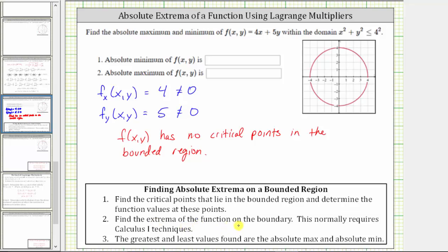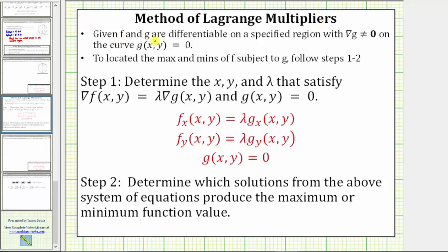The next step is to find the extrema of the function on the boundary using the method of Lagrange multipliers. To review: given that f and g are differentiable and the gradient of g does not equal the zero vector on the curve g(x,y) = 0, to locate the max and mins of f subject to the constraint g, we find x, y, and lambda satisfying the gradient of f equals lambda times the gradient of g. This tells us the max or mins occur when the two gradients are parallel, and this occurs where the level curves of f and g are tangent.